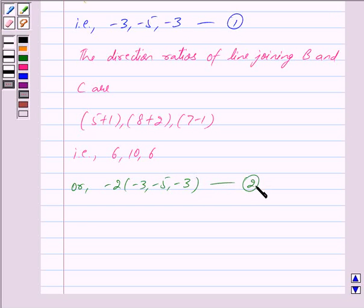From equations 1 and 2, we can see that the direction ratios of line AB and BC are proportional.